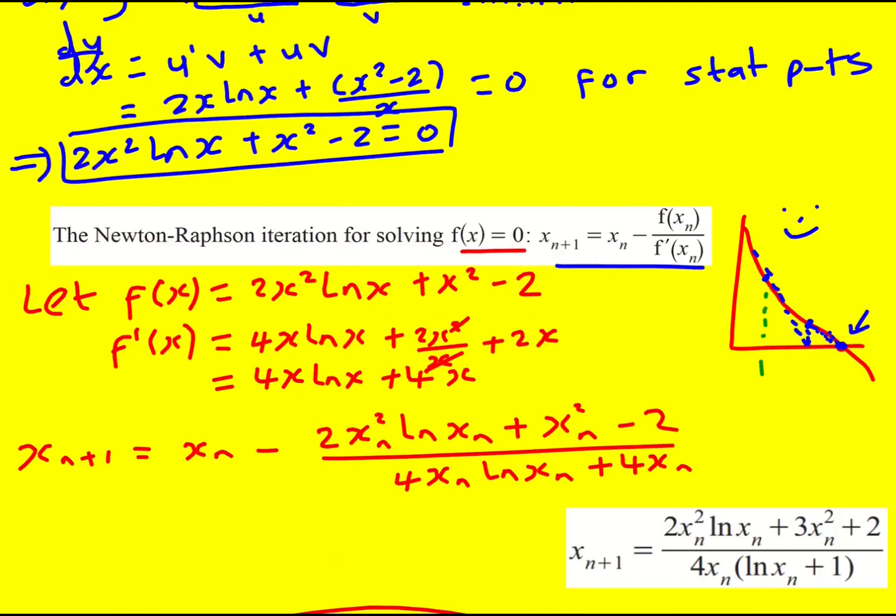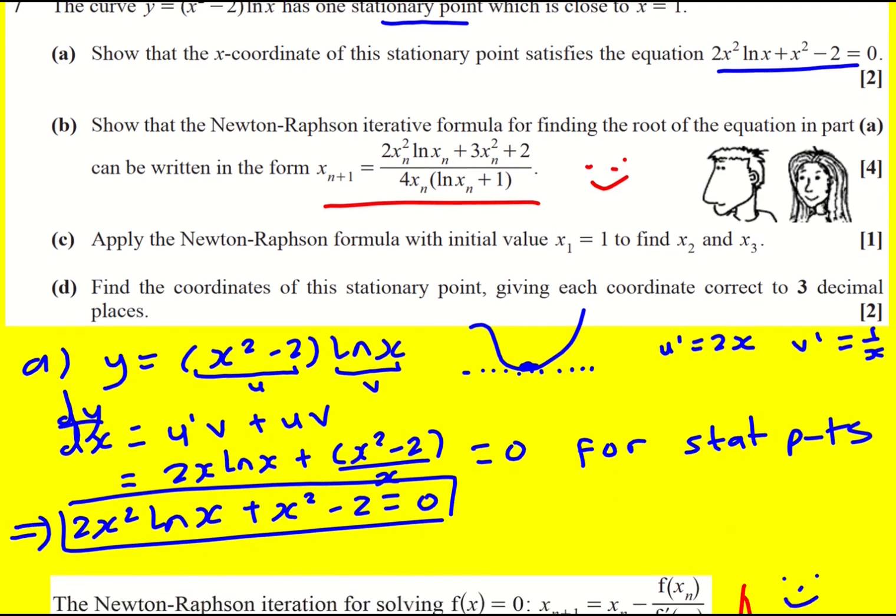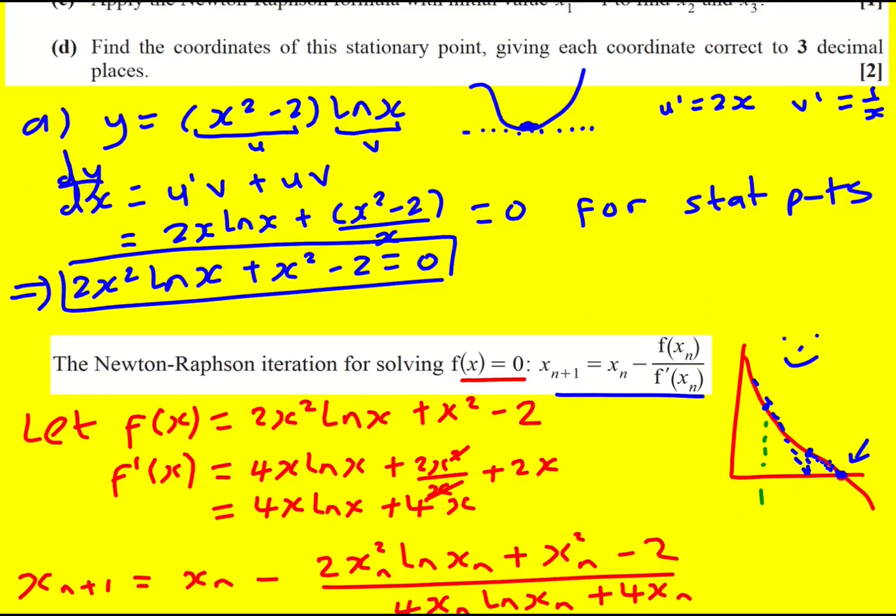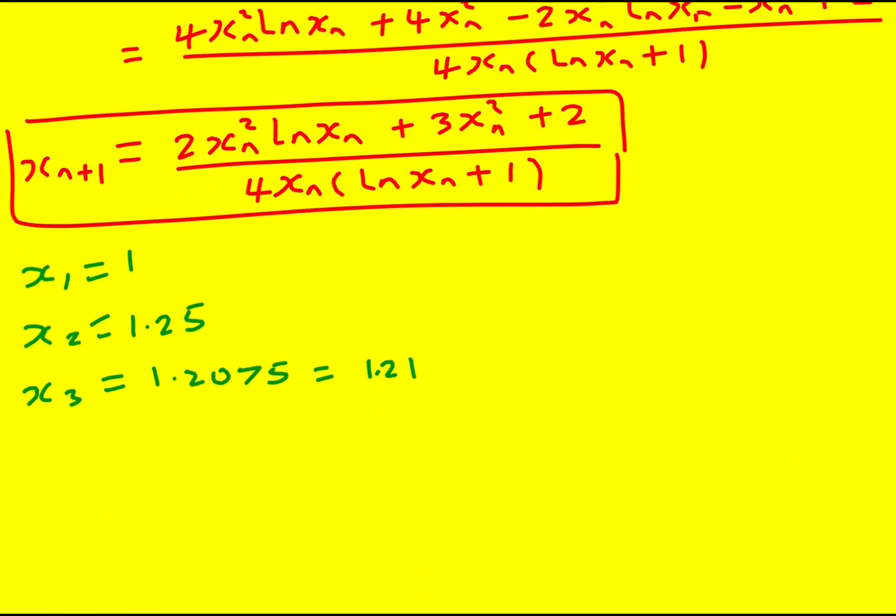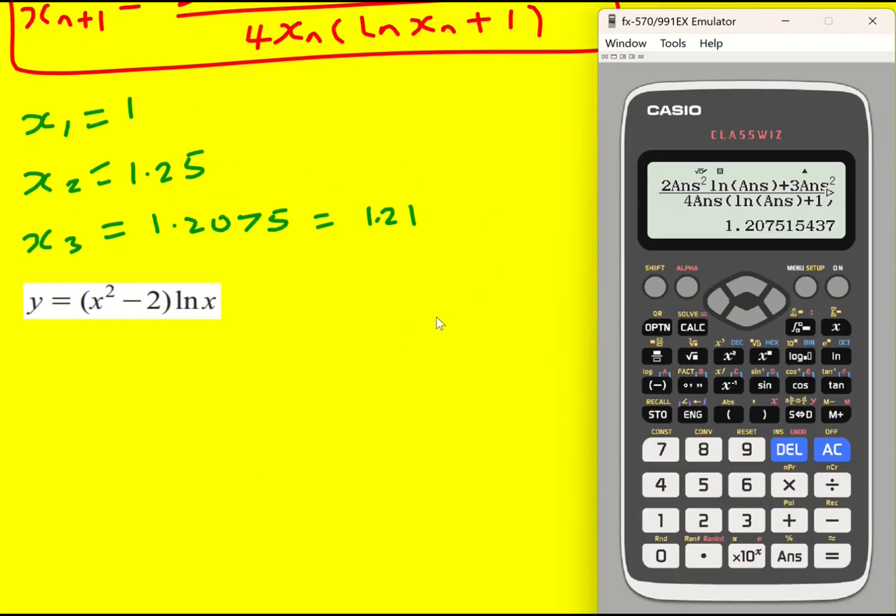So part four asks us to then write down the coordinates of the stationary point, which we've worked out numerically using the Newton-Raphson method. Really nice question, actually. The fact that we're finding a stationary point, not just solving an equation. It's got this practical application. So the stationary point of this function here. The question doesn't ask to prove convergence, but if we press equals, it very quickly converges.